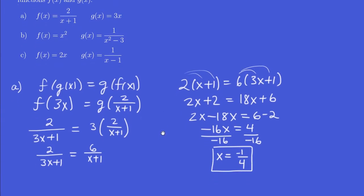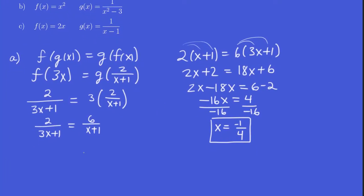Alright, question B. So let's start off the same way just by writing down the equation. Now g of x is 1 over x squared minus 3. Let's make that replacement. And f of x is just x squared. So we'll put that in.